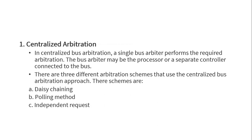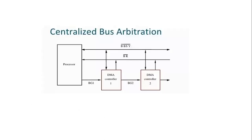When we talk about centralized arbitration, there are three types: daisy chaining, polling method, and independent request. First, let's talk about daisy chaining. Basically, this is centralized arbitration.